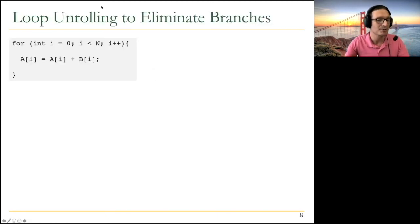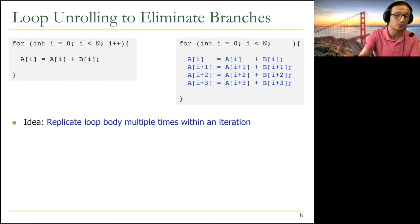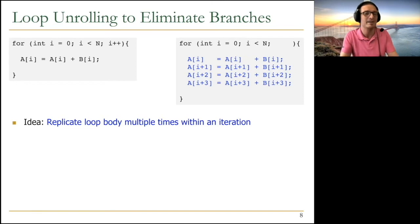So basically, branch handling is a big problem. So a lot of compilers use loop unrolling to eliminate branches. Basically, loop unrolling replicates the loop body multiple times within an iteration. So you may actually have learned about loop unrolling. I have to say it because it's a very basic compiler technique to get rid of branches as much as possible, because branches always provide problems in VLIW, decoupled access and execute, as well as systolic arrays. So you want to get rid of branches as much as possible.